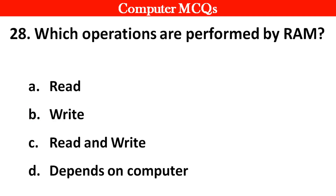Next question. Which operations are performed by RAM? Options A: Read, B: Write, C: Read and write, D: Depends on computer. Right answer is option C: Read and write.